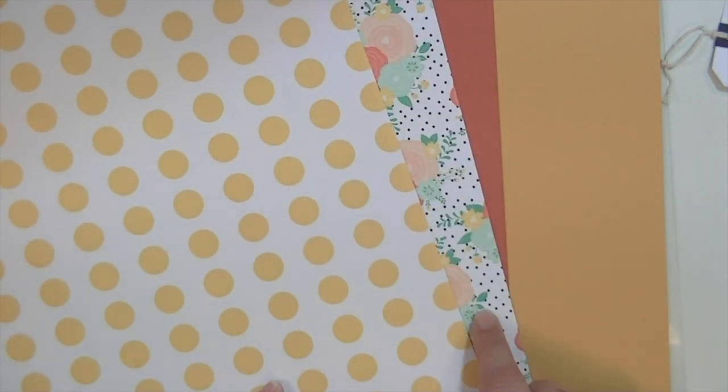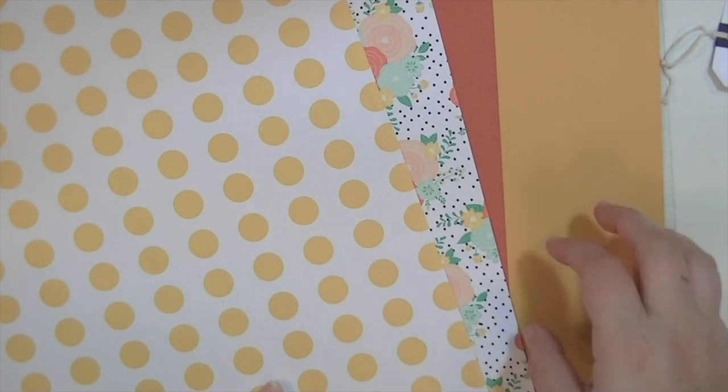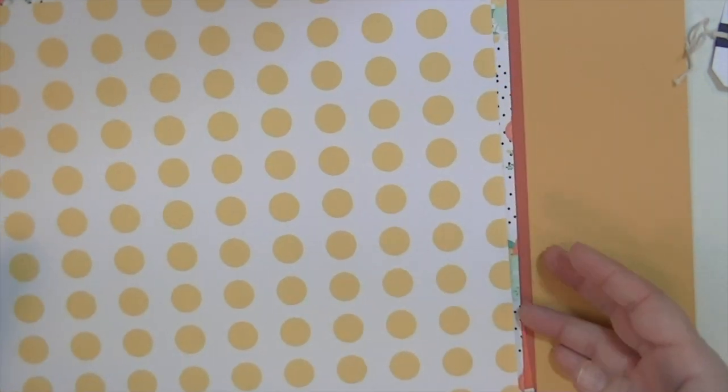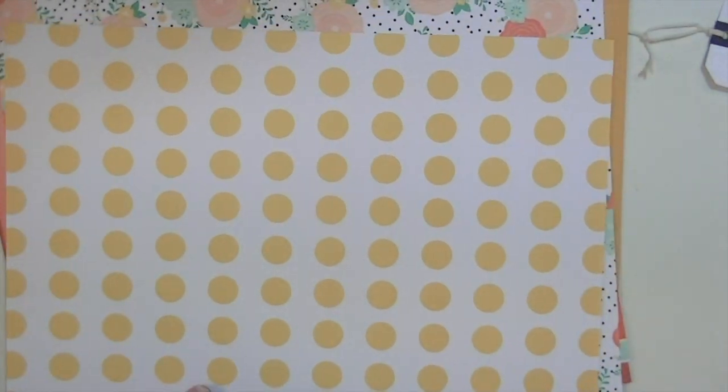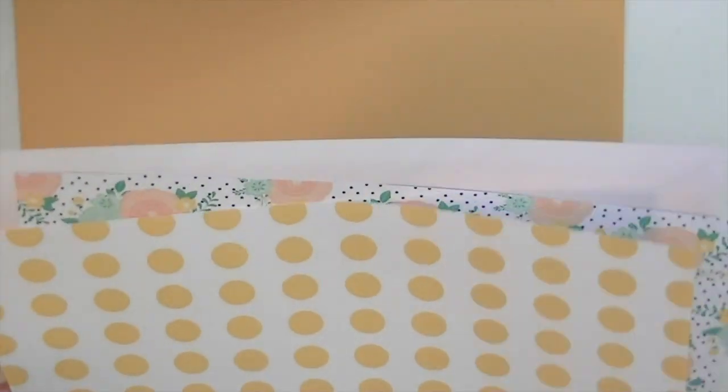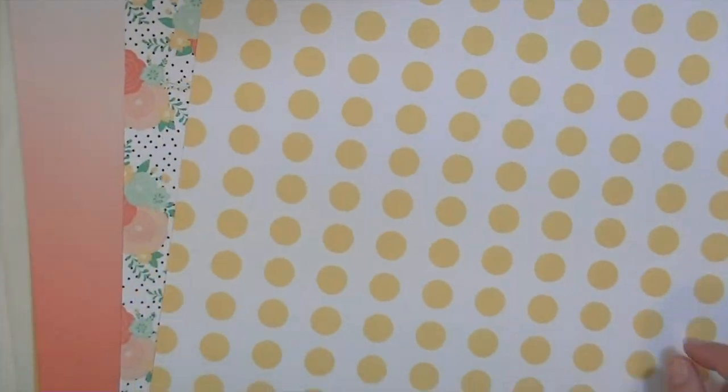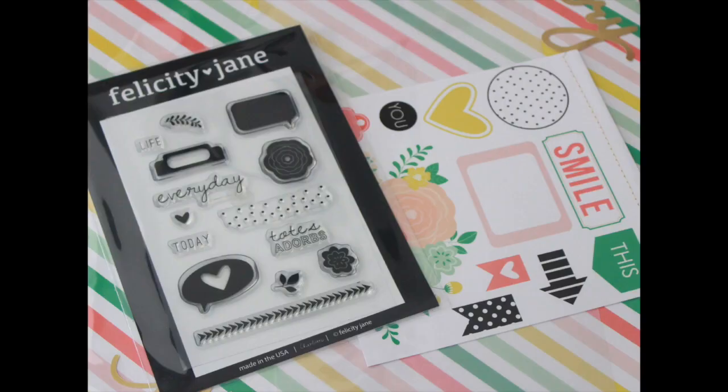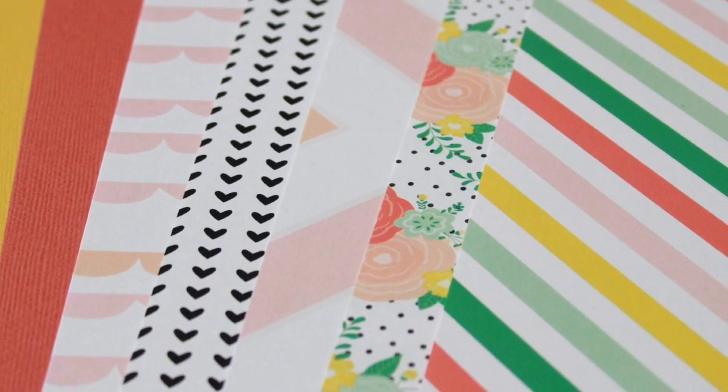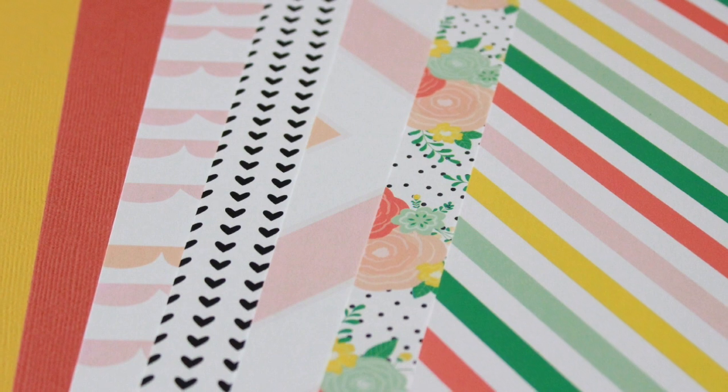So that is the Felicity Jane kit. I believe this kit is called Charlotte, though I'm not completely certain. I'll put a link below to the website and all the information that you need. It's $34.95 if you just want to buy one kit, and it's $29.95 with a subscription. I don't believe that includes shipping, but I'm not positive. Again, you'll just have to check the website.